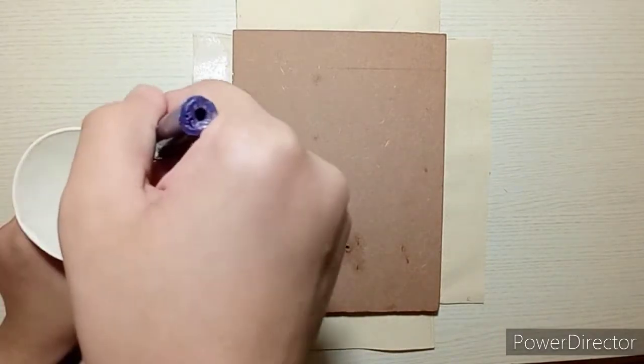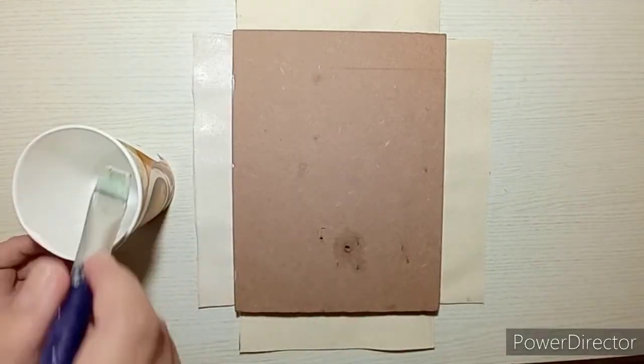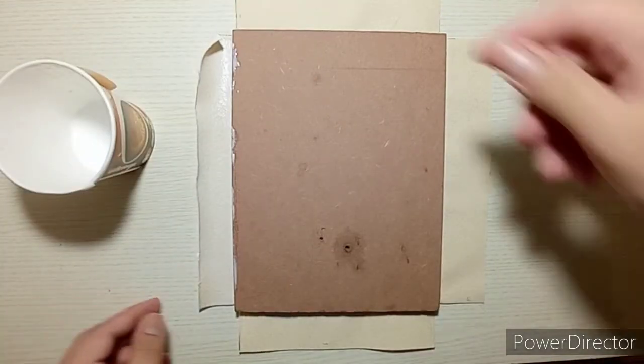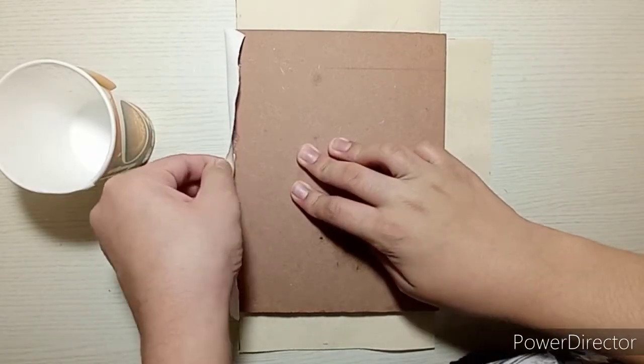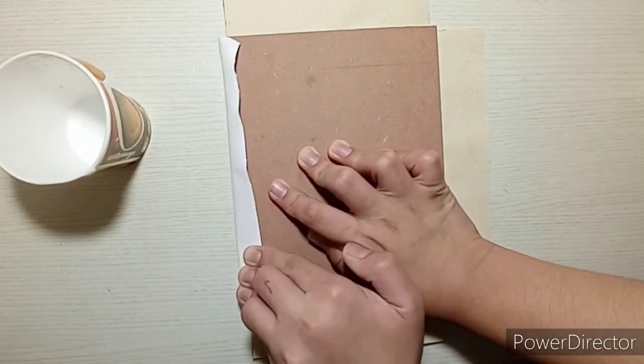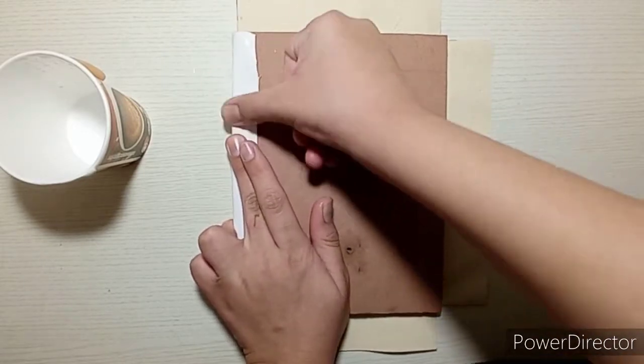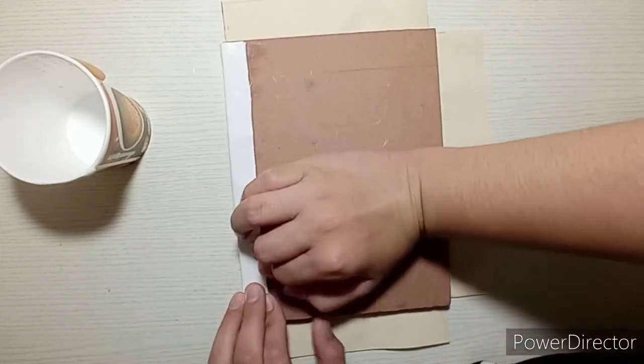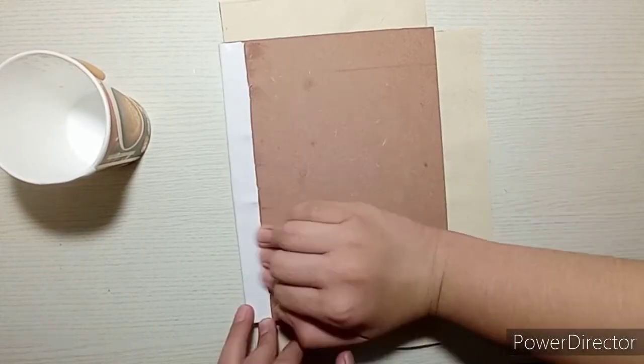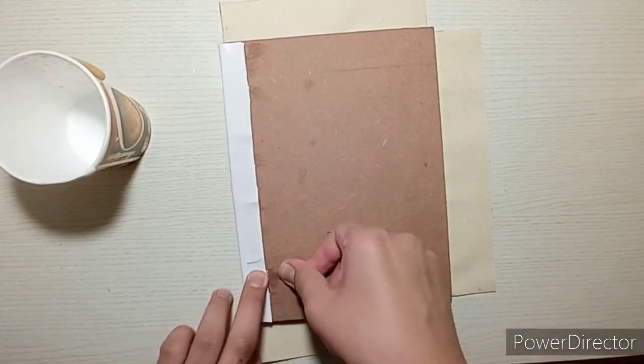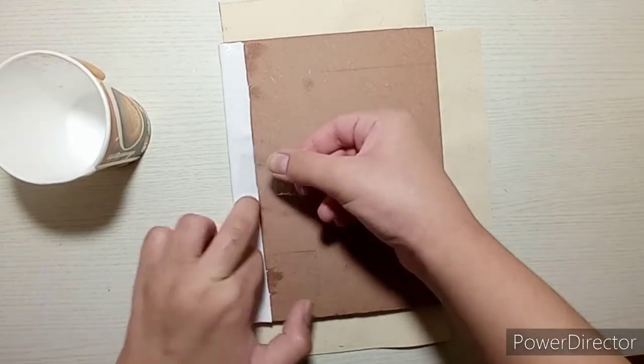Now you're going to take the side and ensure that it sticks very nicely. Apply uniform pressure so that it sticks very well. Now you're going to take some tape and apply it on the wooden board to ensure that it sticks in place and it does not move.